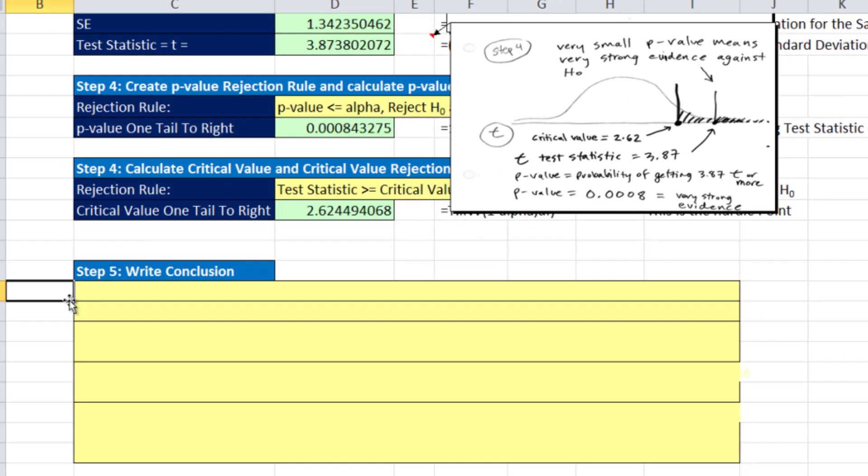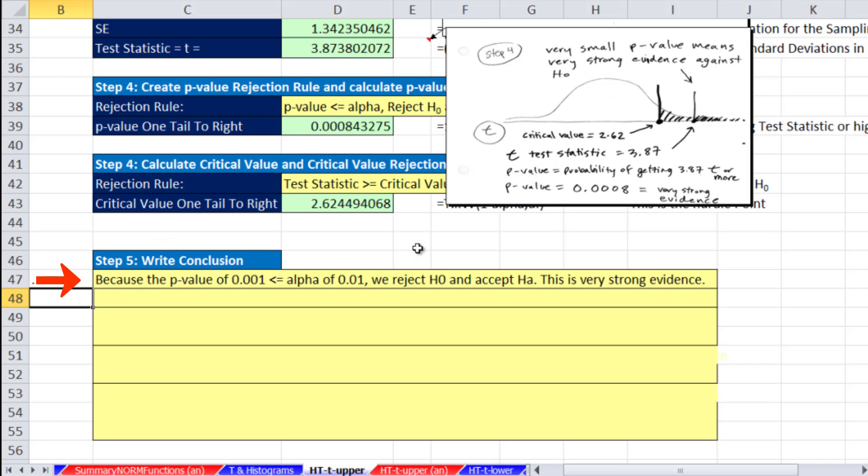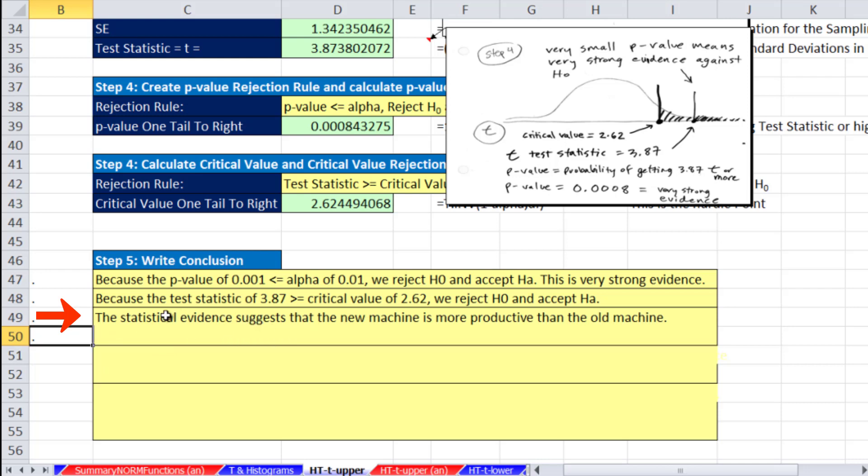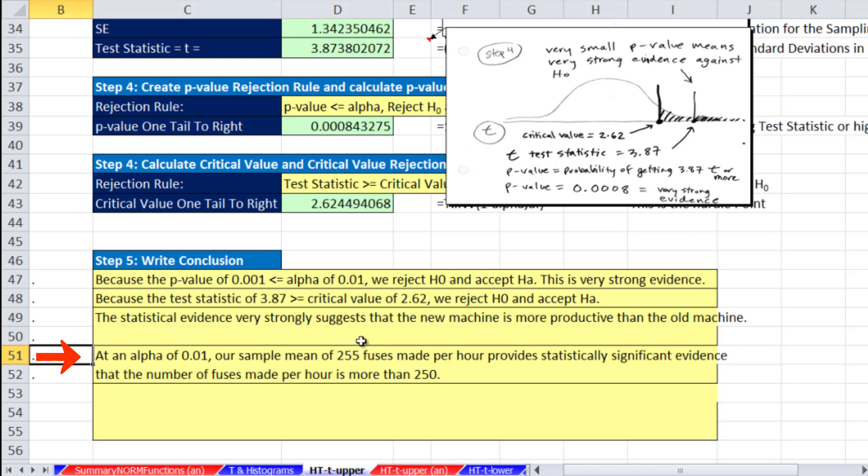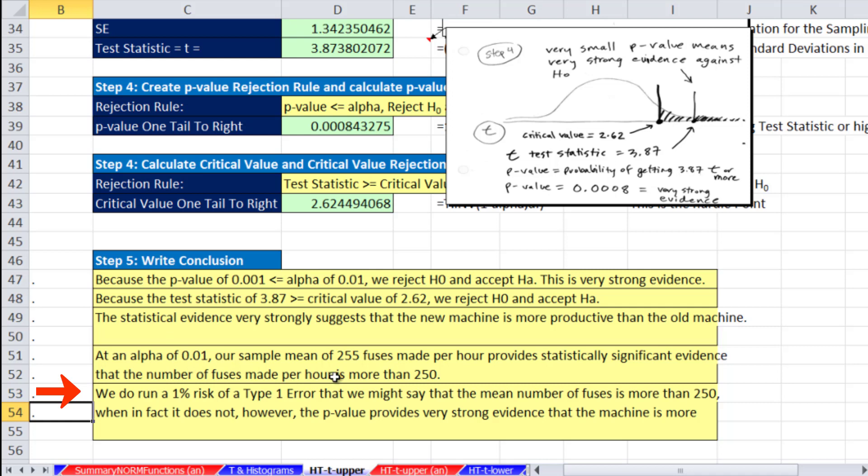So, we did our calculating. Now, always important, we make our conclusion. With the p-value, the p-value is less than our alpha, so we reject the null and accept the alternative. This is very strong evidence. With the critical value, our t-test statistic is bigger than our critical value, so we reject the null and accept the alternative. Succinctly said, the statistical evidence very strongly suggests that the new machine is more productive than the old machine. At an alpha of 0.01, our sample mean of 255 fuses made per hour provides statistically significant evidence that the number of fuses made per hour is more than 250. Finally, we do have the chance of making an error. We do run a 1% risk of a type 1 error. However, the p-value provides very strong evidence that this machine is more productive.